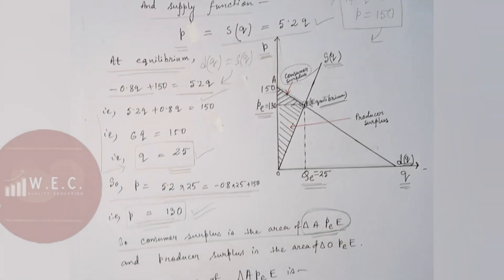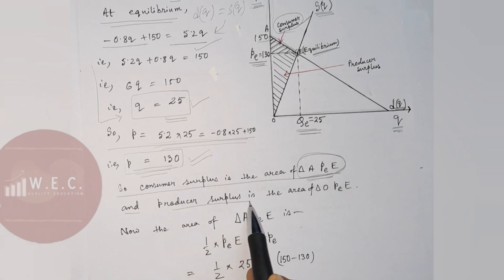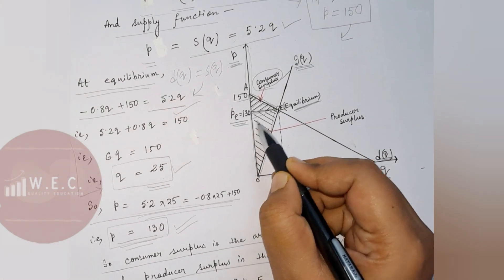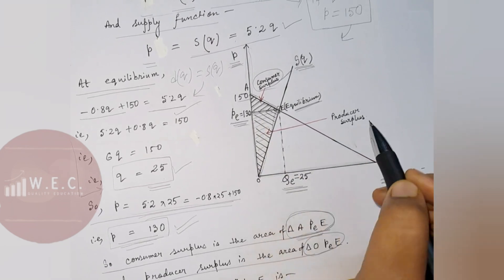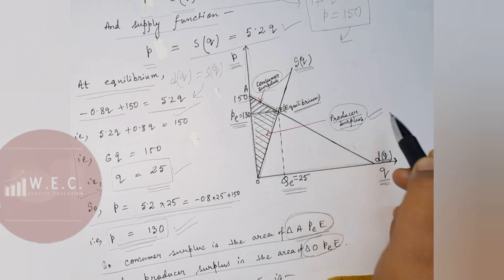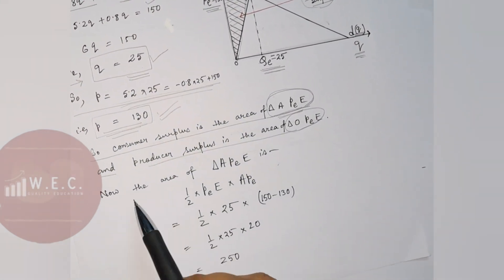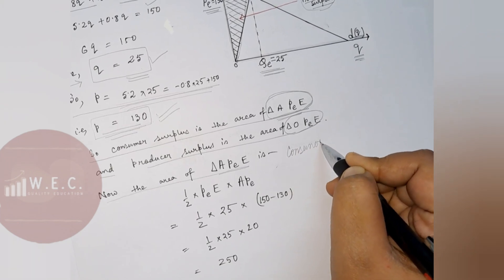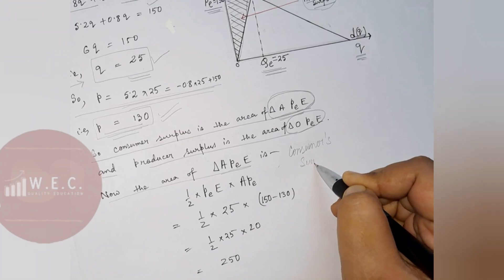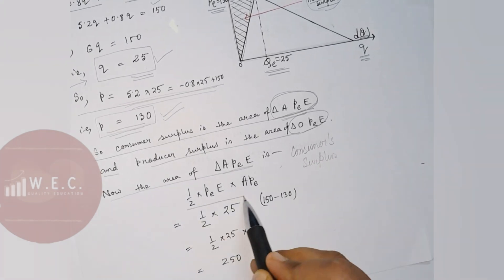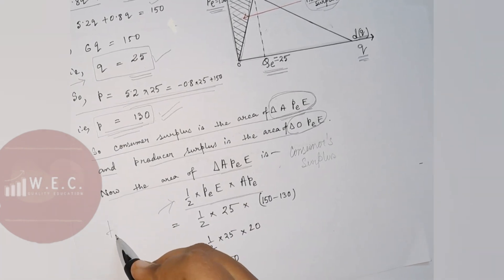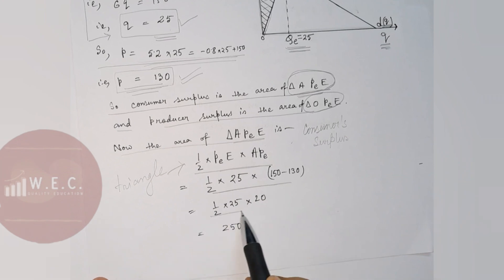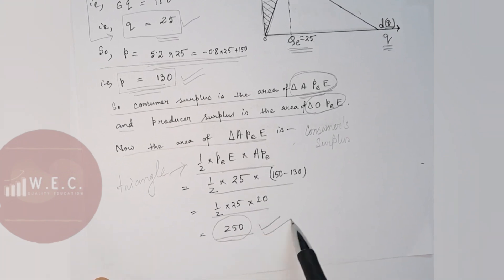Producer surplus is the area of triangle OpeE — it is the area below the equilibrium price and above the supply curve. The area of triangle ApeE, which is consumer surplus, is calculated using the formula: half times perpendicular times base, giving 250 rupees. So consumer surplus is 250 rupees.